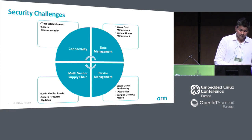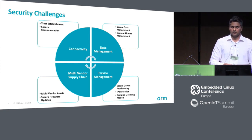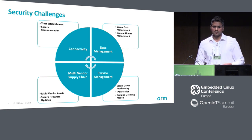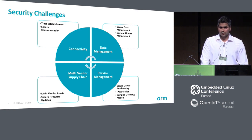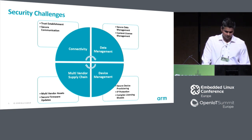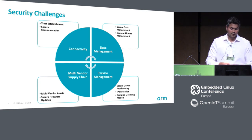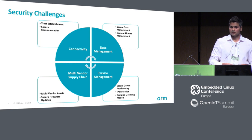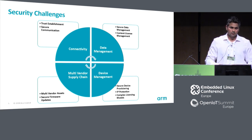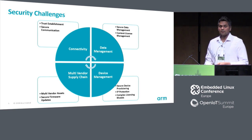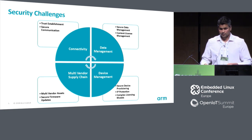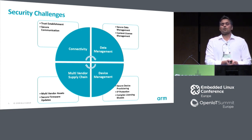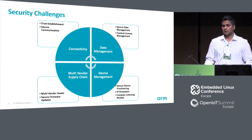For device provisioning, since there are monetary aspects attached to feature enablement and disablement, we want to make sure that the subscription model and revenue models are supported by underlying security. For firmware updates, software could be coming from many different places — the secure-side software vendor could be one entity, the non-secure-side business case vendor another. You may want to install applications from multiple partners who don't want to trust each other, making the update process very complex.